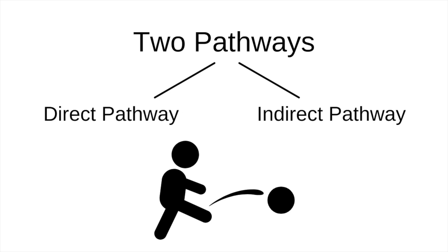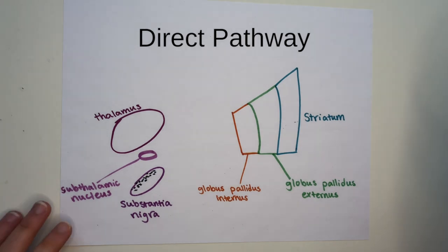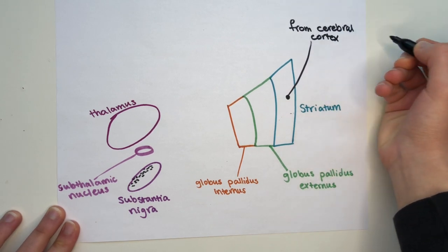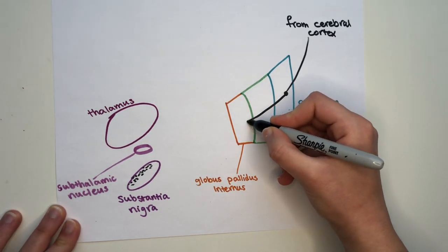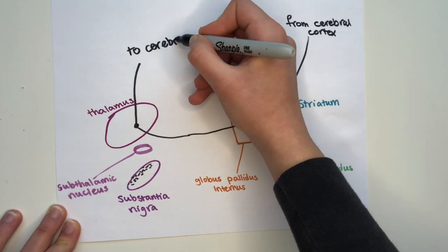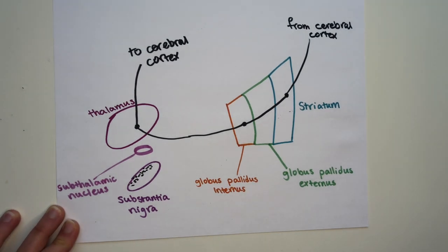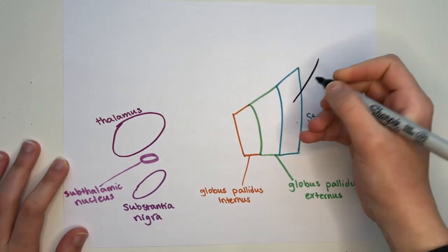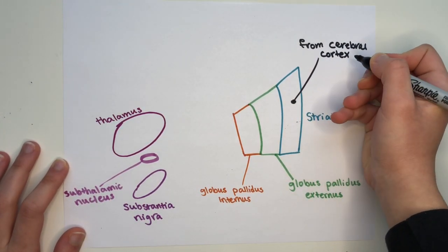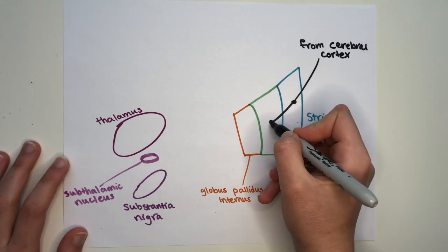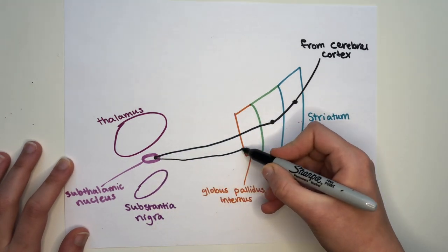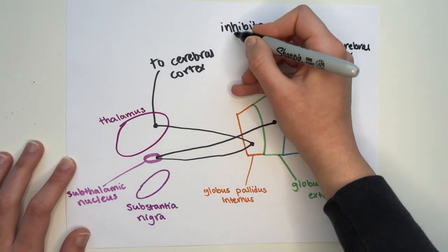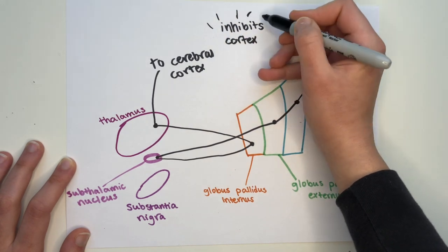Let's say our goal is to kick a soccer ball into the net. In the direct pathway, first our cerebral cortex would tell our basal ganglia — more specifically the striatum — that we want to achieve the goal. From there, this signal would travel to the globus pallidus internus, then to the thalamus, and then the cerebral cortex once more. The direct pathway ultimately excites the cortex. In the indirect pathway, we once again receive a message from the cerebral cortex to the striatum, then to the globus pallidus externus, then to the subthalamic nucleus, then to the globus pallidus internus, then to the thalamus, and ultimately the cerebral cortex again. The indirect pathway inhibits the cortex. Together, these two pathways help you kick that ball and score.